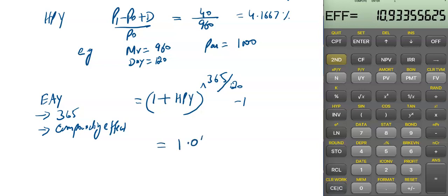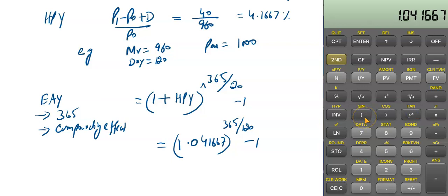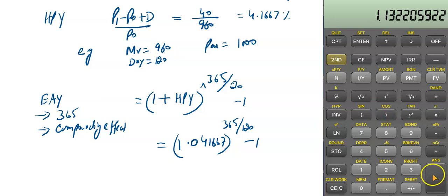So it is 1.041667 raised to the power (365/120) minus 1. On the calculator: 1.041667 raised to the power (365/120) equals 13.22%. That is the effective annual yield.